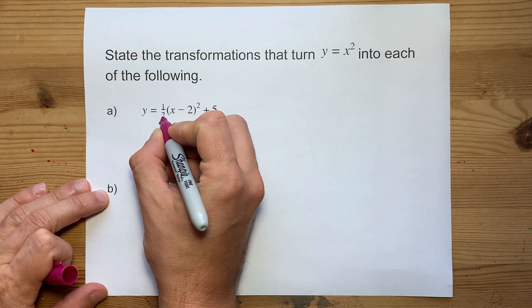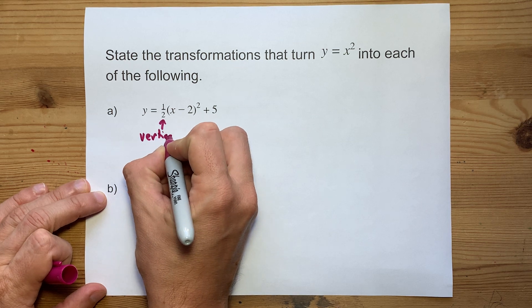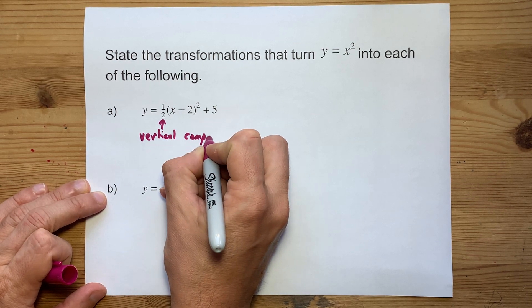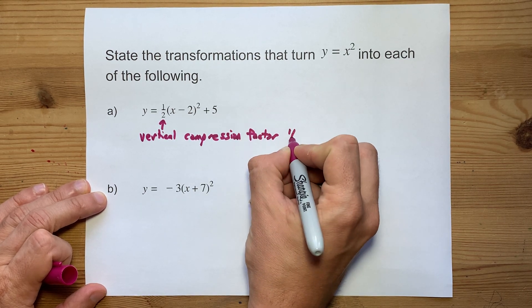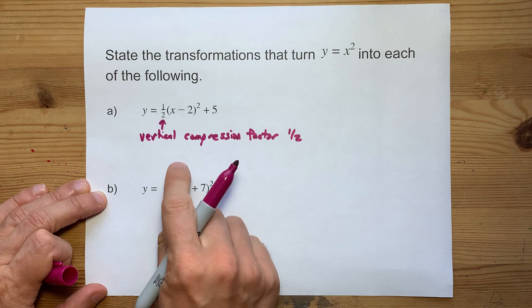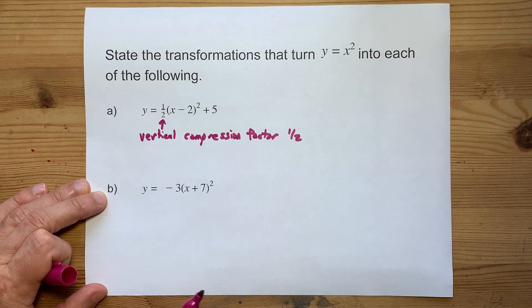If the number is less than 1, then it's a compression. We want you to write vertical compression by a factor of a half. It might make sense that if you're multiplying by a half, everything should be half as tall. That's what's happening here.